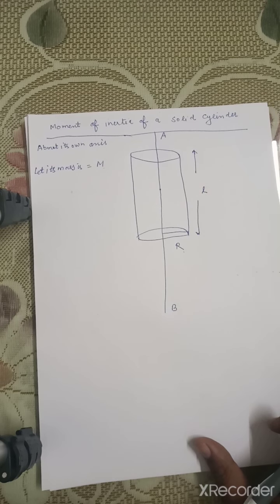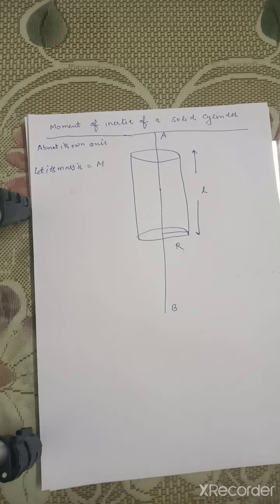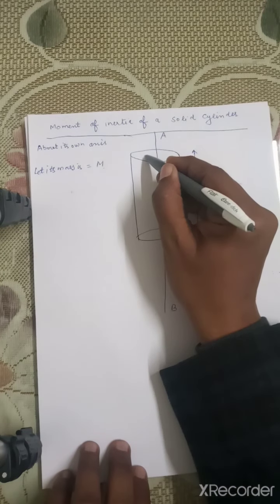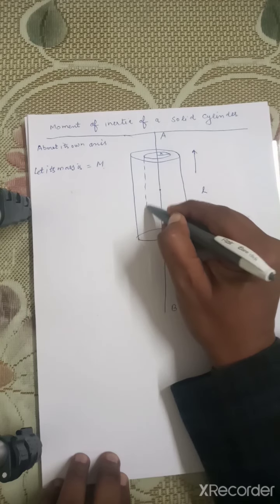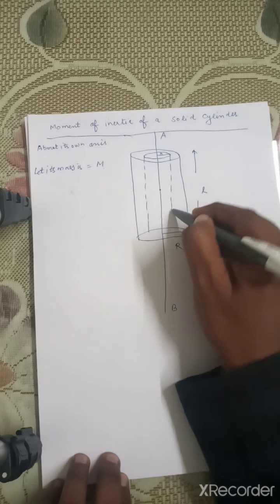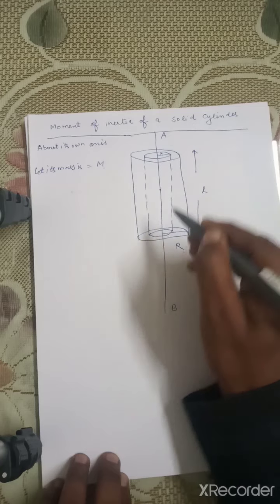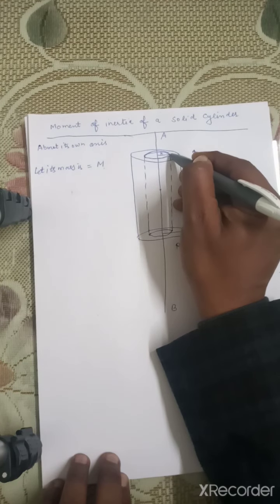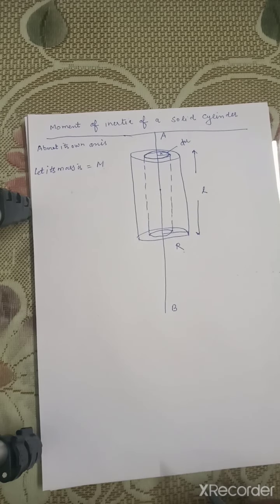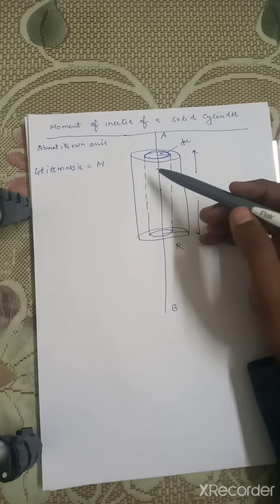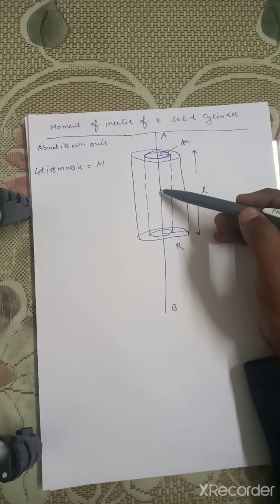To proceed further, we have to imagine the slender to be divided into a large number of thin coaxially elementary hollow slenders. We can assume this slender is made up of a very large number of coaxial hollow slenders. Let us consider one such elementary slender of radius x and thickness dx. All particles of this elementary slender are at a distance x from the axis of rotation.